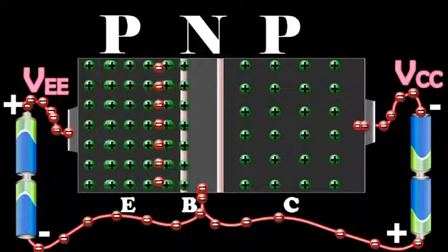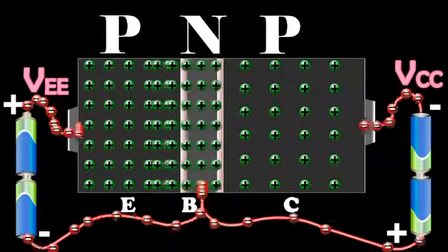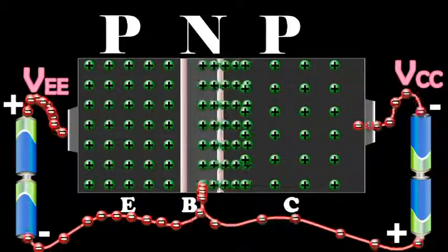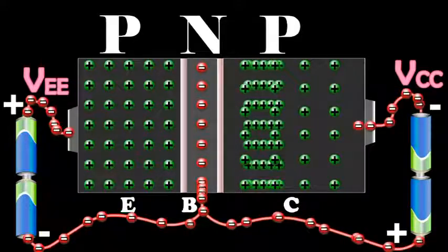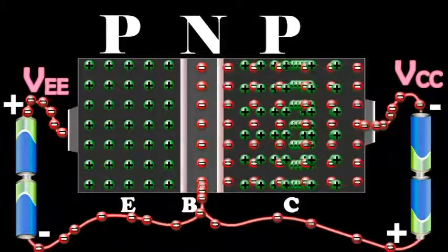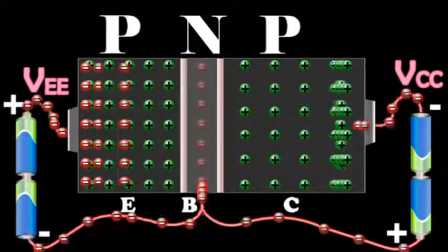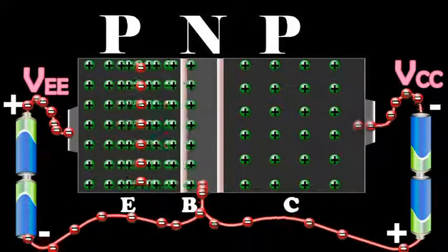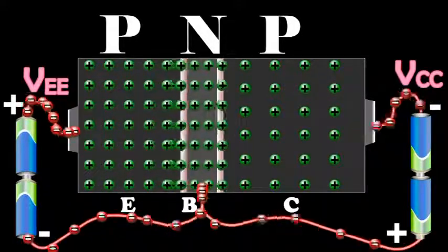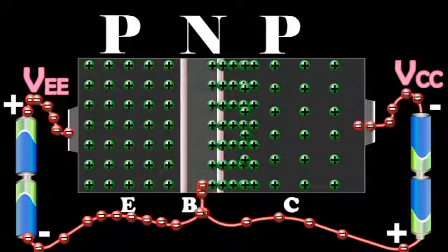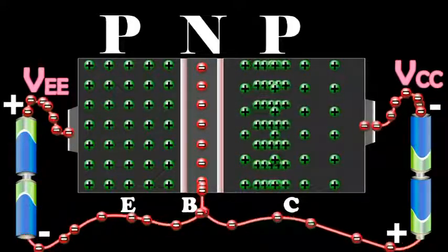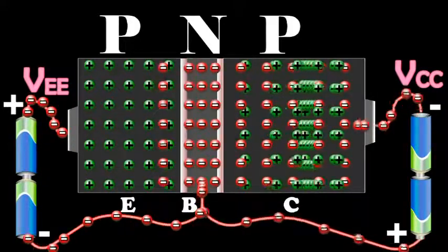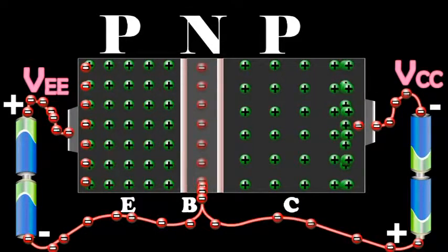These electrons, when they reach the emitter, recombine with an equal number of holes in the emitter. The loss of total number of holes in the emitter is made up by the flow of an equal number of electrons from the emitter to the positive terminal of the battery. The flow of holes from the emitter to the base gives rise to emitter current IE.